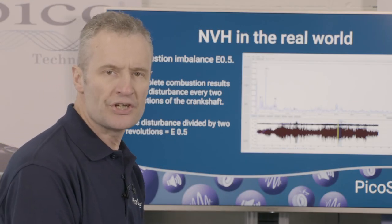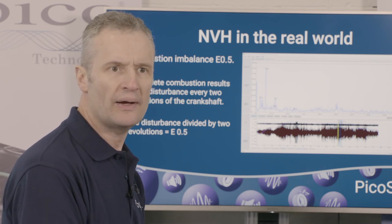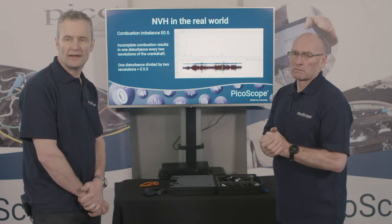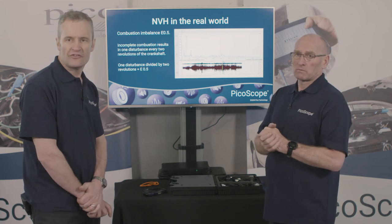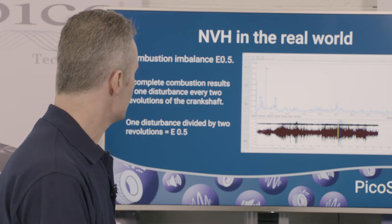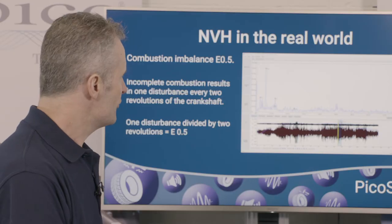Here we look at a combustion anomaly — not so much misfire, but uneven combustion. This is a vehicle that had a diesel injector replaced. Everything is fine at idle and 1500 RPM, but there was a peak vibration that occurred around 3000 RPM. You can clearly see E0.5 in the spectrum, and the vibration level is intense enough to be felt in the cabin. The software eliminated a number of possibilities — while T1 and E1 are high, E0.5 is nothing compared to that; that's where we would focus our attention.